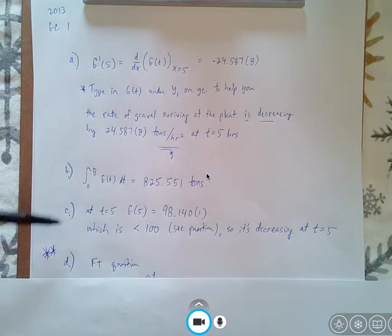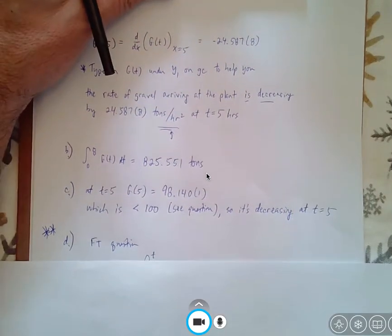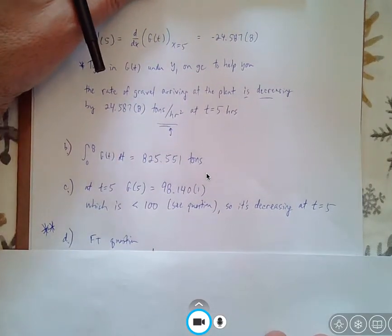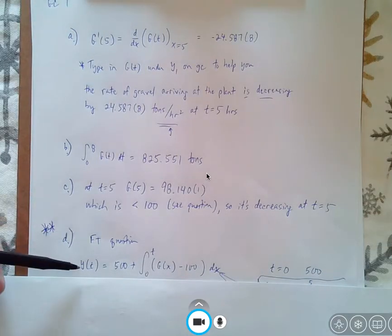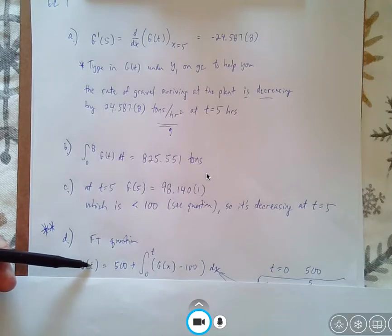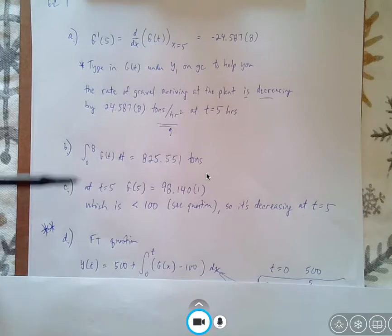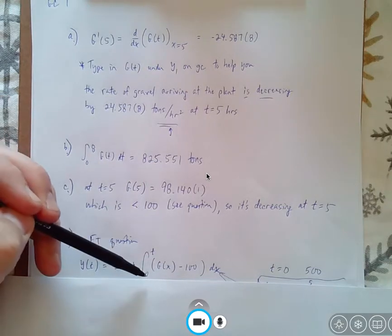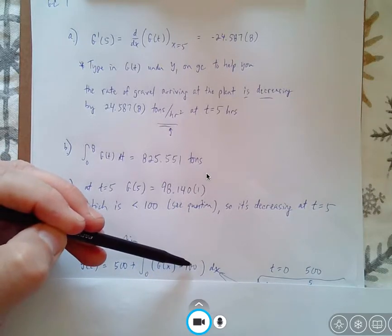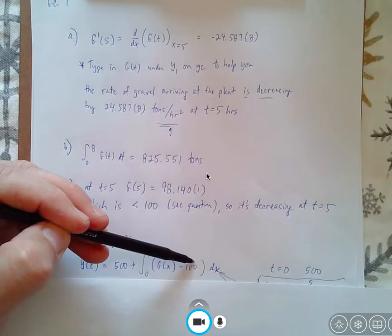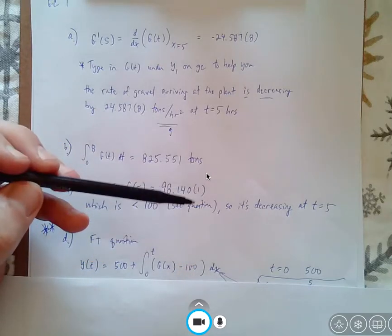And I thought question D was a really hard question, and I know statistically that was a question not a lot of people in the country got correct, but it's a fundamental theorem question. So understand that you have to set up some other function, whether it's y(t), the amount, a(t), p(t), whatever you want to write. It's the original amount, 500, plus the integral from 0 to any time of the gravel minus the 100 tons that's processed each hour.